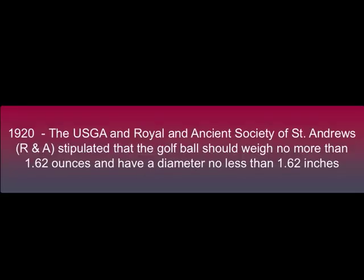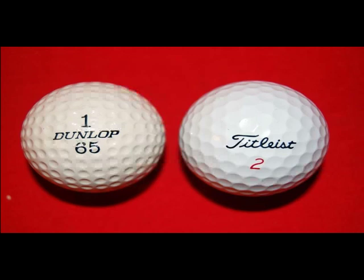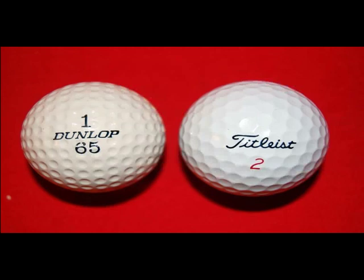Improvements in the Haskell ball spawned a host of regulations from the R&A and USGA. In 1920, for the first time the size of the golf ball was set — both organizations agreed the ball should weigh no more than 1.62 ounces and have a diameter of not less than 1.62 inches. However, in 1931 the USGA broke from the collective agreement and introduced the big ball, with a minimum size of 1.68 inches and a maximum weight of 1.55 ounces; a year later they raised the weight to 1.62 ounces. Under pressure from the PGA in Great Britain, the R&A in 1968 announced the bigger ball would be used in R&A tournaments, and in 1988 the smaller ball was outlawed. This photo shows the larger American ball at 1.68 inches and the smaller British ball, the Dunlop, at 1.62 inches.